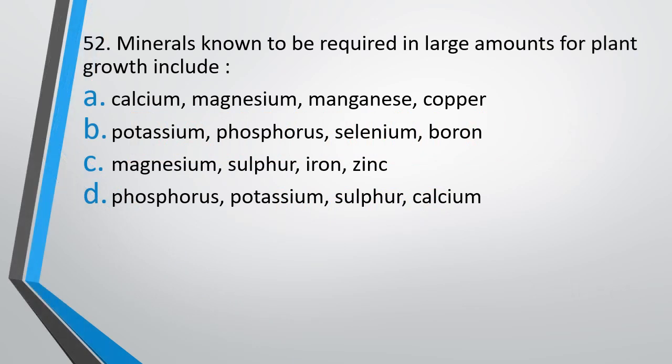Question number 52. Minerals known to be required in large amounts for plant growth include: option A — calcium, magnesium, manganese, copper; option B — potassium, phosphorus, selenium, boron, magnesium; option C — sulfur, iron, zinc; option D — phosphorus, potassium, sulfur, calcium. Which minerals are required in large amounts for plant growth?